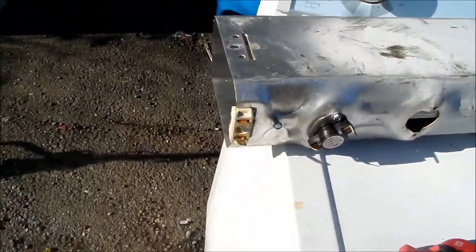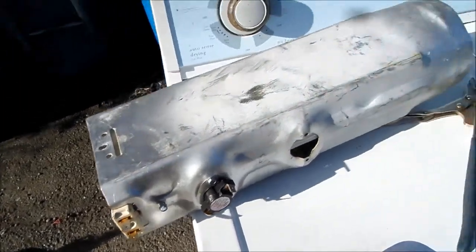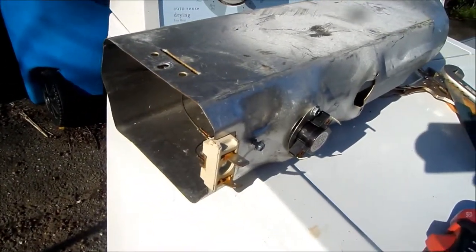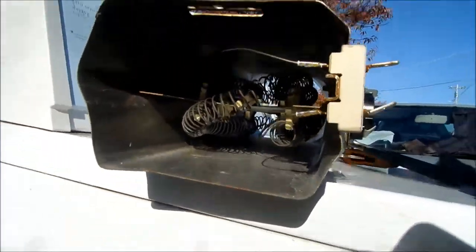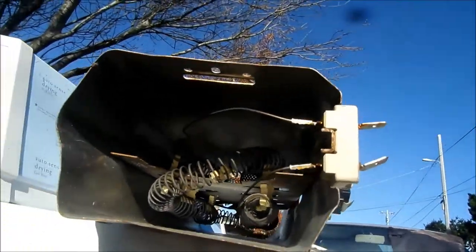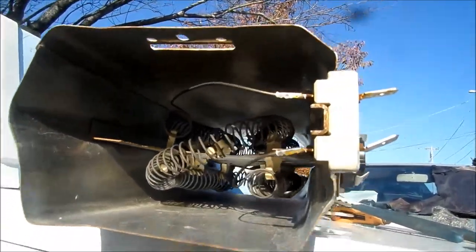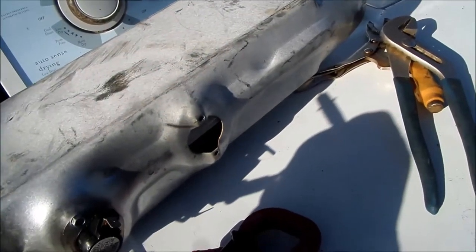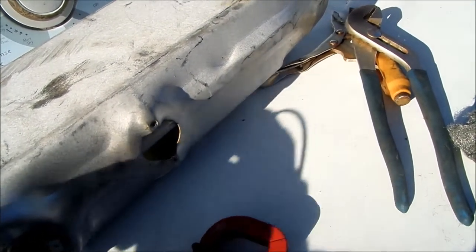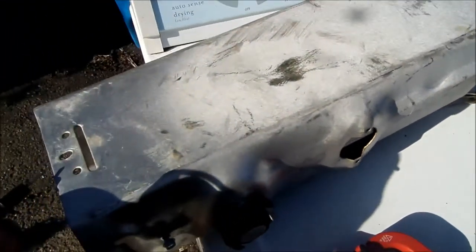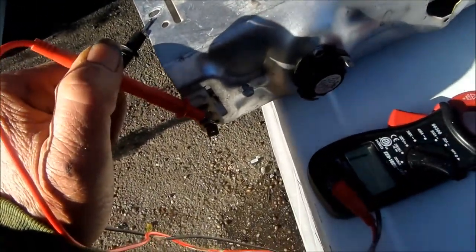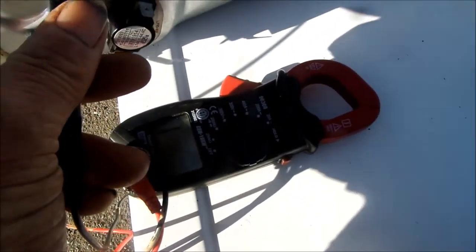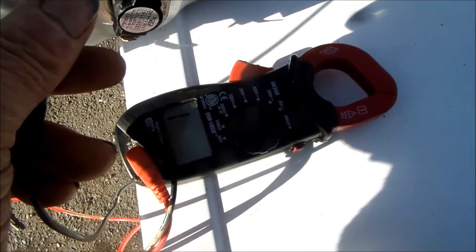Okay, before we hook this heat element up, what we're going to do is we're going to do a short test. Testing for shorts. If you look in there, we'll see that the heat element does not touch the housing at all. So we're just going to test that with a meter. Set the meter on continuity, one terminal connected and the other terminal to the ground. And we see no continuity there. So that's a good sign.